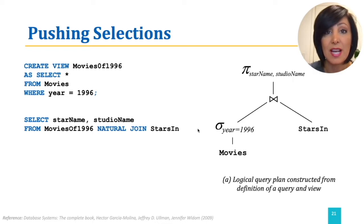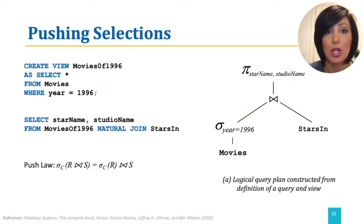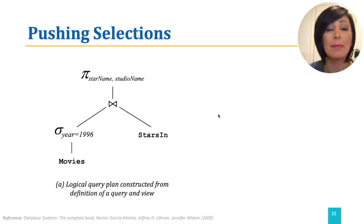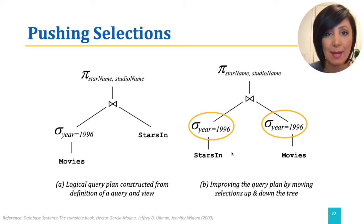The left side is a subtree for the view, joined with the Movies table and the projection of the star name and the studio name applied to the join. The push law usable here is the push law on join, saying the selection on a join may be pushed to one argument or vice versa. By algebraic laws, we push up the select so that it is applied to our join, then push it down so that it is applied to the Movies table as well.